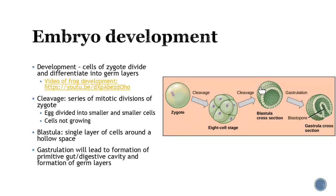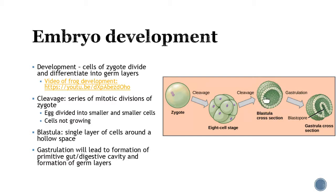The inner cell mass is where we have the embryonic stem cell pool — those are like the holy grail for stem cell scientists. One thing to notice is that it's not growing in size — the cells aren't growing. We're just dividing and dividing; it's still about the same size as the zygote was. We're just dividing the cells into smaller components.